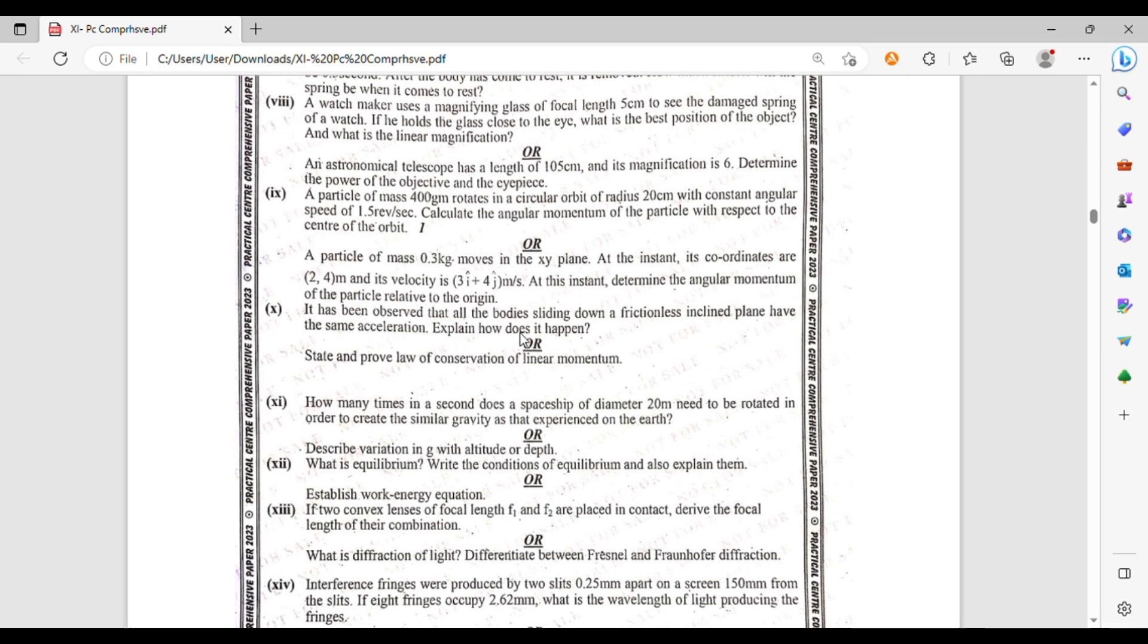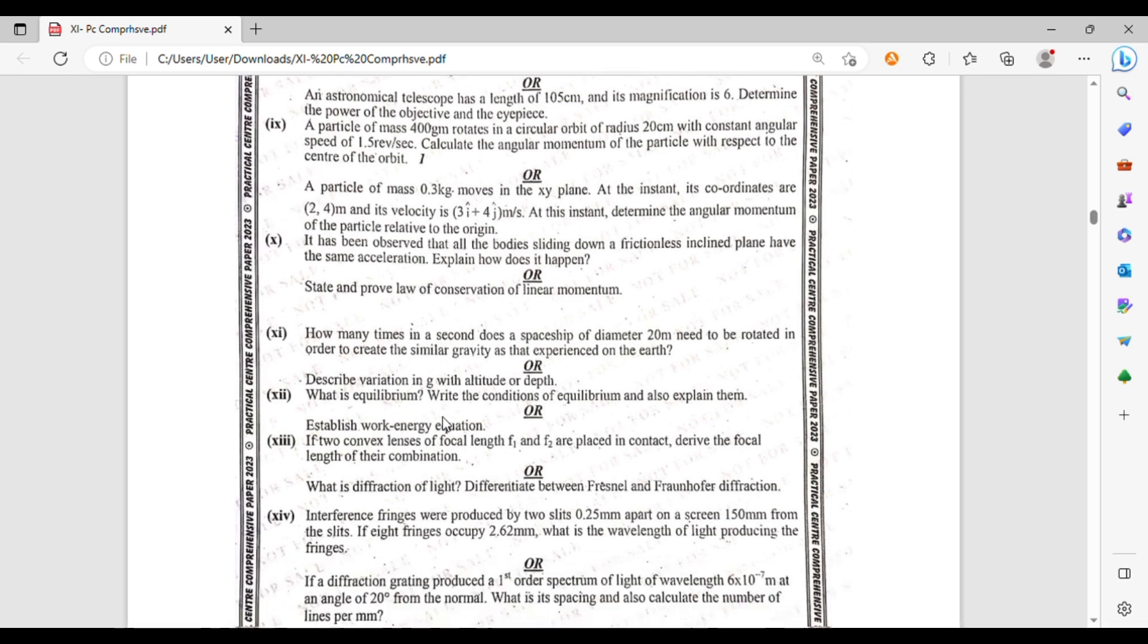It is observed that bodies sliding down frictionless inclined planes have the same acceleration. Explain how does it happen. Give a scientific reason. Or state and explain law of conservation of linear momentum. How many times in a second does a spaceship of diameter 20 meter need to be rotated in order to create a similar gravity as that experienced on the earth? Or describe variation in g with altitude or depth.